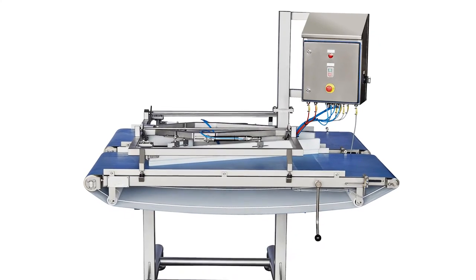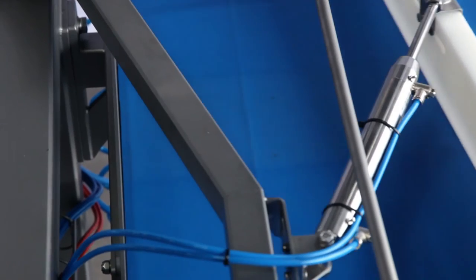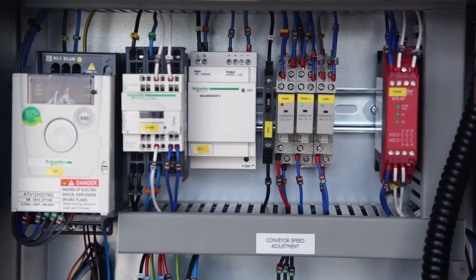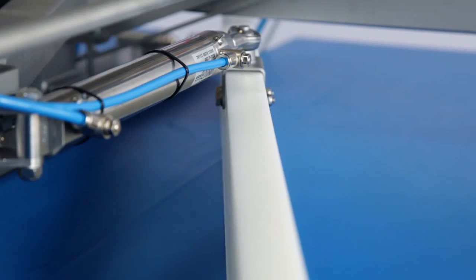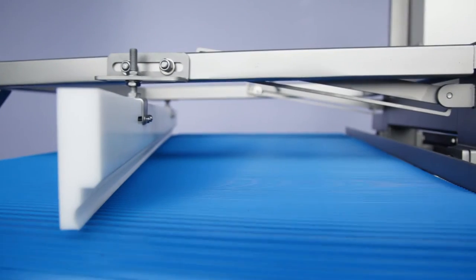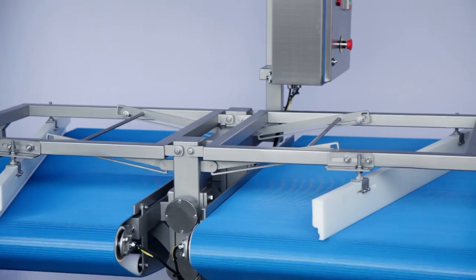The four- and six-lane pinbone removers can be provided with an automatic in-feed conveyor for splitting up the fillets from two to four or six lanes. The out-feed conveyor is collecting the fillets in two lanes after pinbone removal.